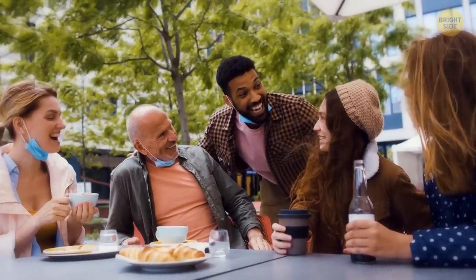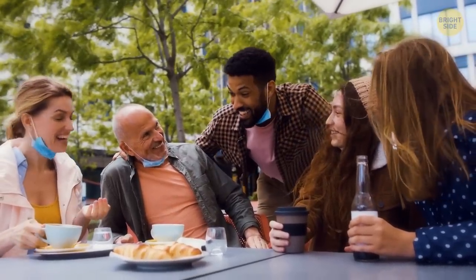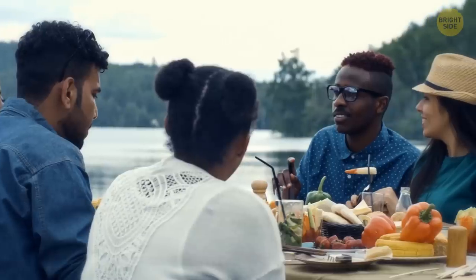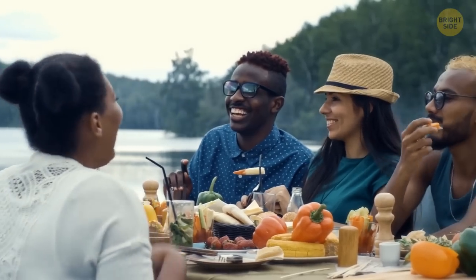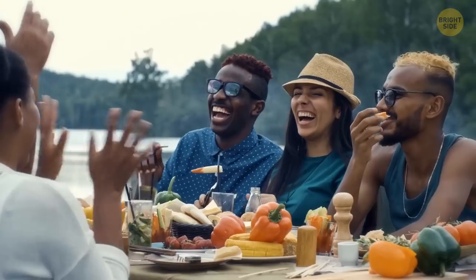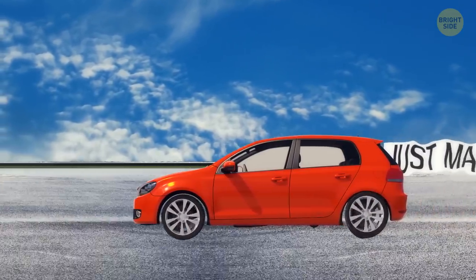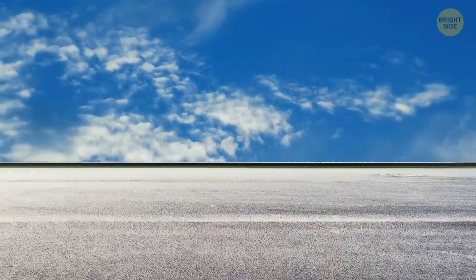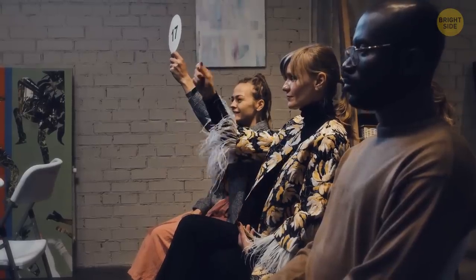But this ordeal didn't stop Charles Osborne from living a relatively normal life. People knew him as a happy-go-lucky guy who loved cracking jokes and didn't talk much about his condition. He married twice and had eight children. He sold farm machinery and auctioned off livestock for living.